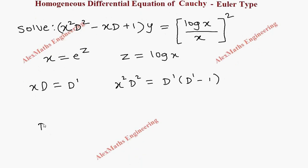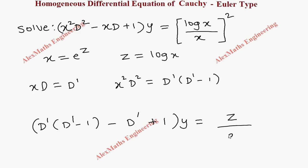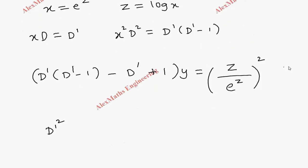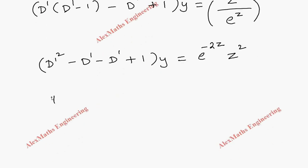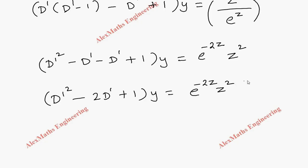Substituting this in the question, we get D'(D' minus 1) minus D' plus 1, whole bracket into y, equal to log x — which is z — and 1/x, which can be replaced as e power minus z. Squaring gives e power minus 2z. Multiplying out, we get D'² minus 2D' plus 1 into y equal to e power minus 2z into z².